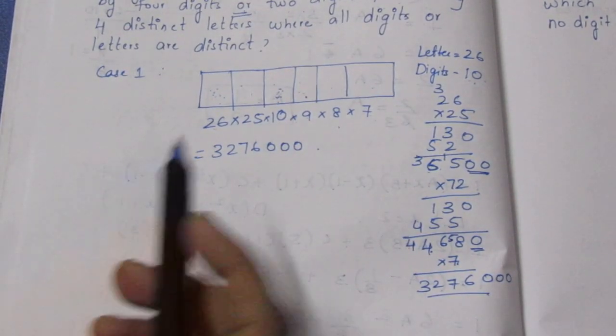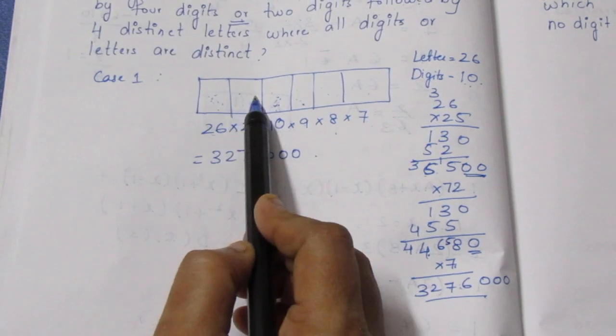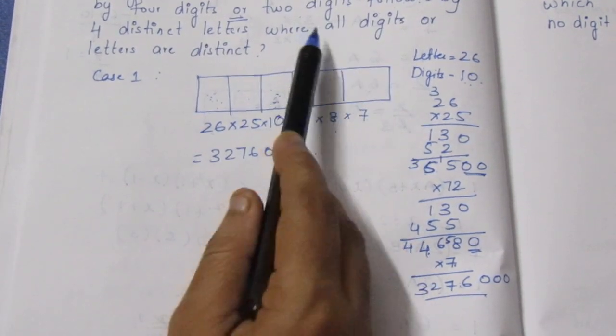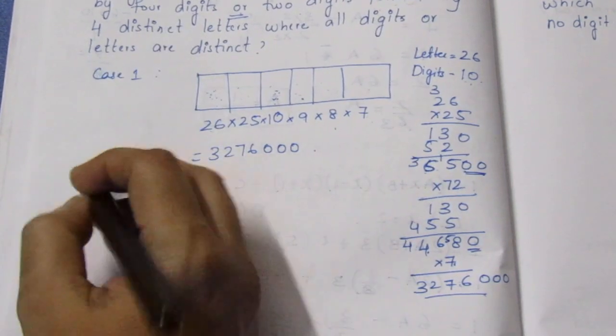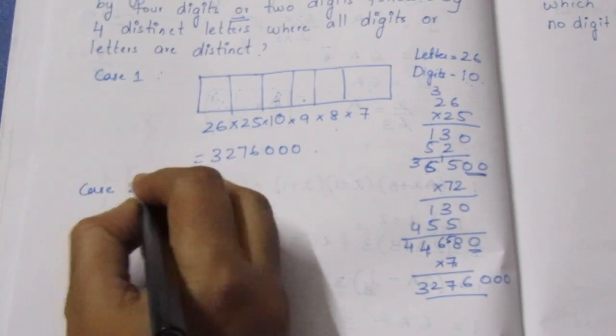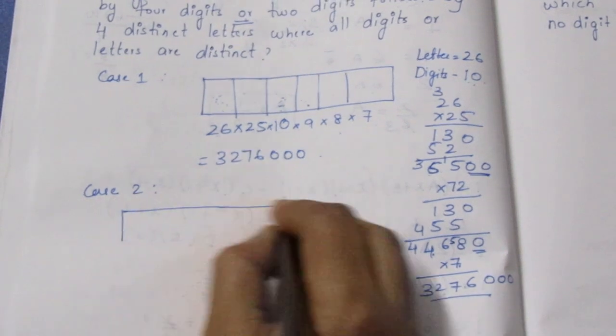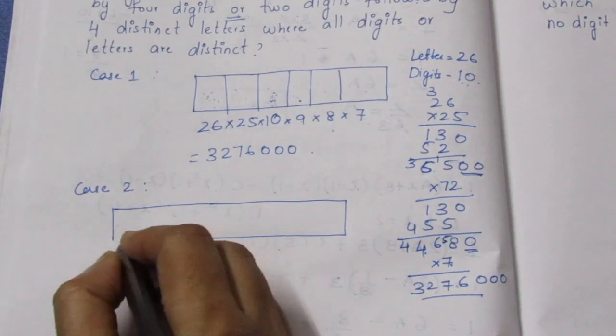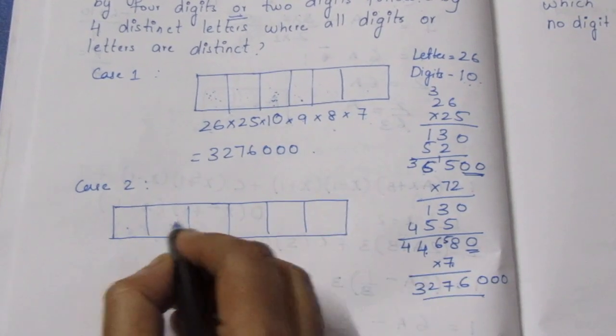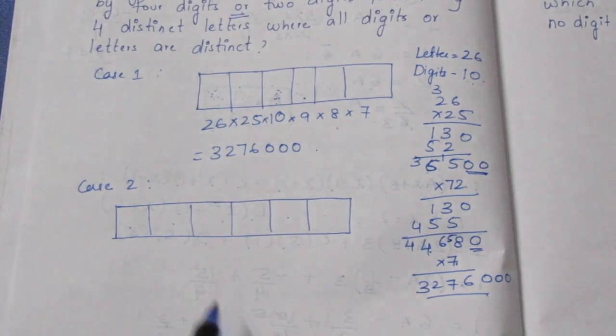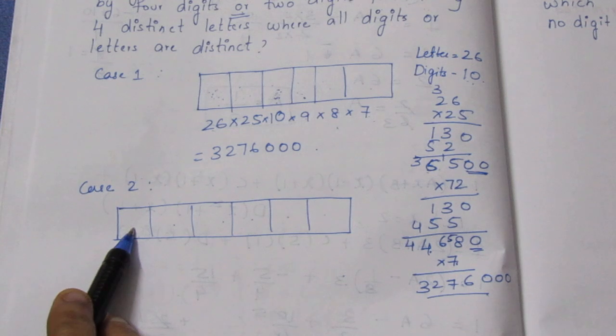This is the first condition: two distinct letters and four digits. Now Case 2. In Case 2, the first one is the number, the second one is the letter.